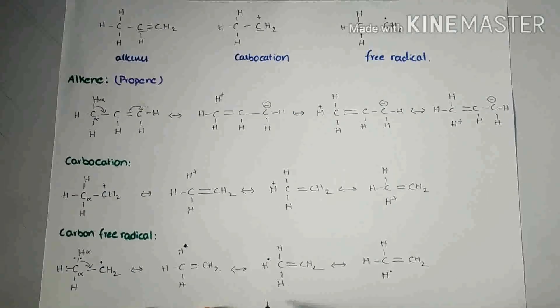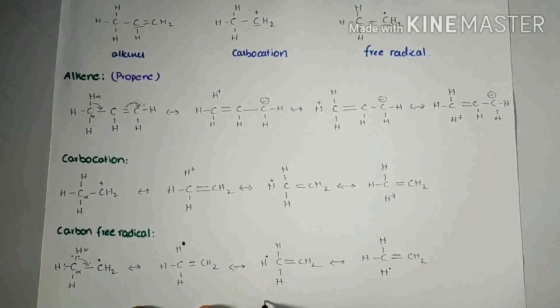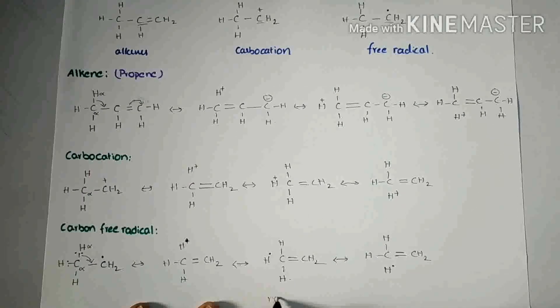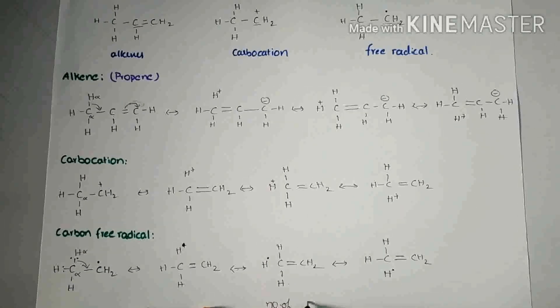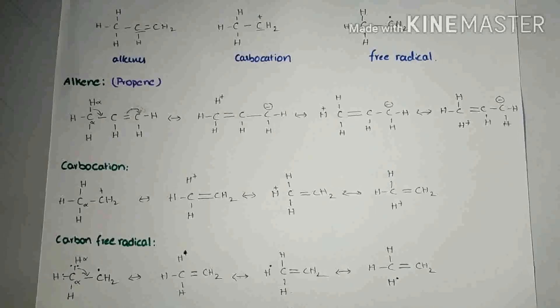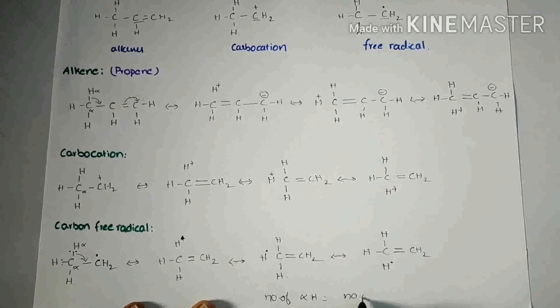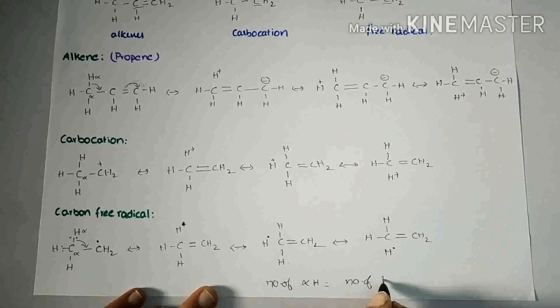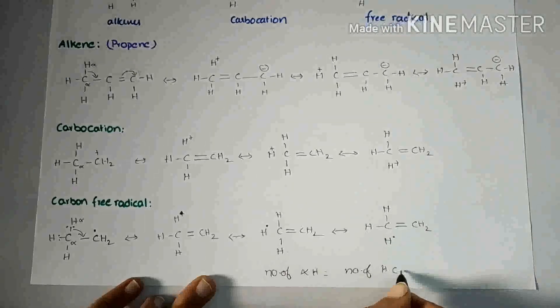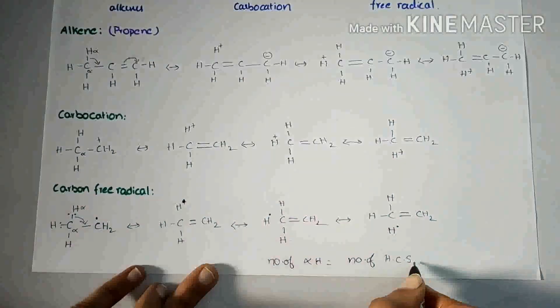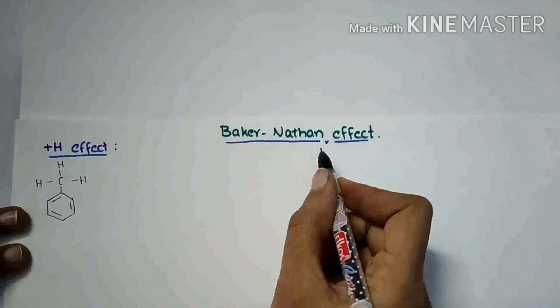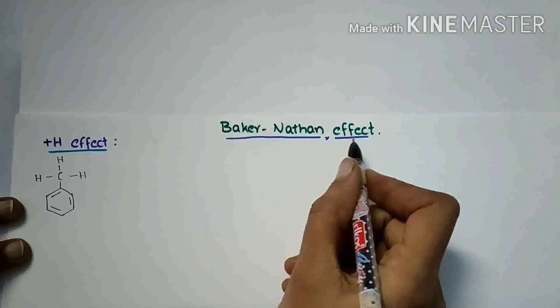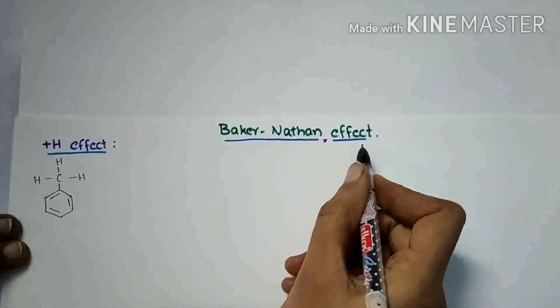You must remember that the number of alpha hydrogens is equal to the number of hyperconjugative structures. Another name for hyperconjugation effect is the Baker-Nathan effect.